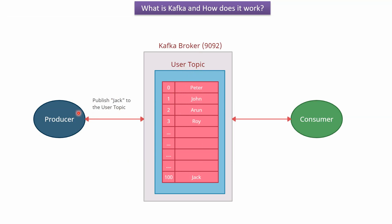Whenever the producer publishes a username to the user topic, the username will be appended with corresponding indexes. Here you can see the consumer. If this consumer wants to consume usernames from the user topic, it has to subscribe to the user topic. Once subscribed, it can first consume the username Peter, then John, and will keep on consuming other usernames from the user topic.